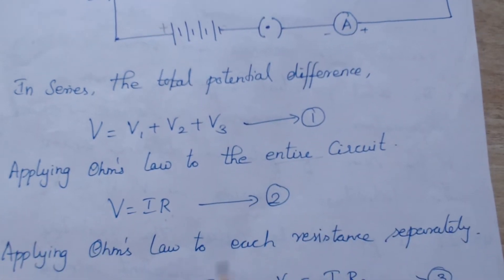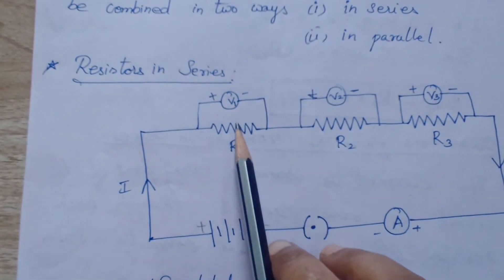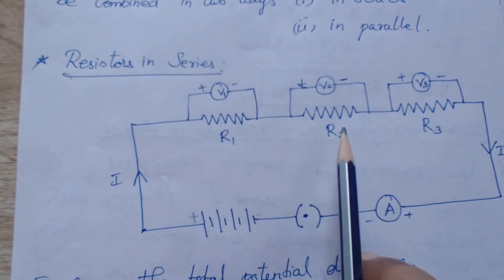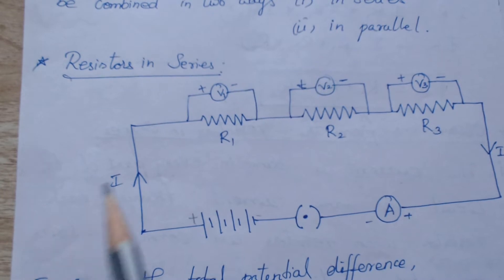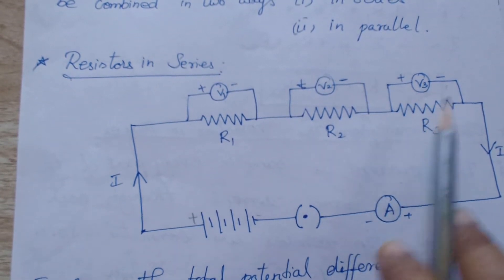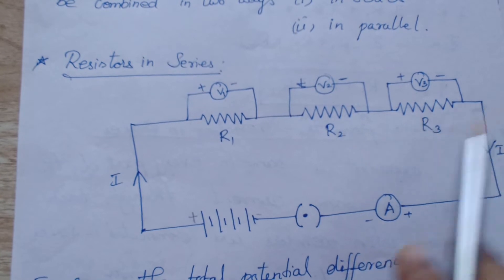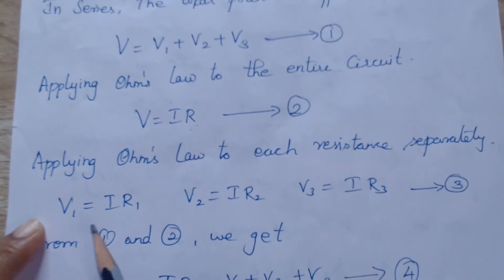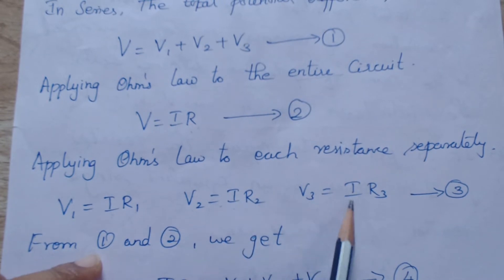Now we will apply the same Ohm's law to each resistor separately. Here, resistor R1 has current I flowing through it and potential difference V1. Resistor R2 has potential difference V2 with the same current flowing through it. Because in series, the current will be the same throughout the circuit. Resistor R3 has potential difference V3 and current I. So applying Ohm's law to each resistor: V1 equals IR1, V2 equals IR2, V3 equals IR3.